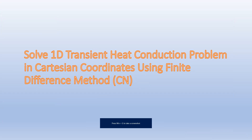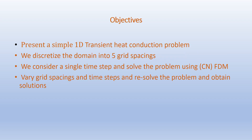Hello friends. In the last video we solved a 1D transient heat conduction problem in Cartesian coordinates using backward time centered space, or BTCS, finite difference method. In this video we are going to solve the same 1D transient heat conduction problem using the Crank-Nicolson finite difference method. Our objectives are to present a simple 1D transient heat conduction problem, discretize the domain into 5 grid spacings, consider a single time step, and solve the problem using Crank-Nicolson. We will then vary the grid spacings and time steps and resolve the problem to obtain solutions.